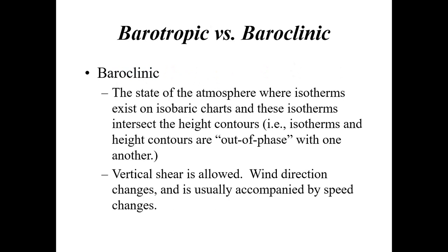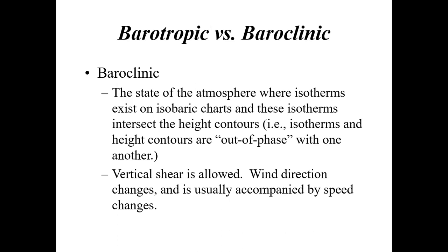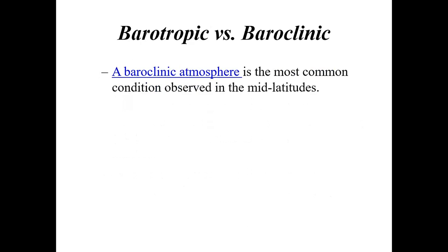The important one is baroclinic — very important for our changeable weather in the mid-latitudes. When the atmosphere is baroclinic, isotherms exist on isobaric charts and these lines of equal temperature intersect or cross height contours — they are out of phase with one another. Vertical shear is allowed, wind direction changes, and you get wind shear caused by speed changes with height. Thermal wind is present and temperature advection is allowed. A baroclinic atmosphere is the most common observation in the middle latitudes.